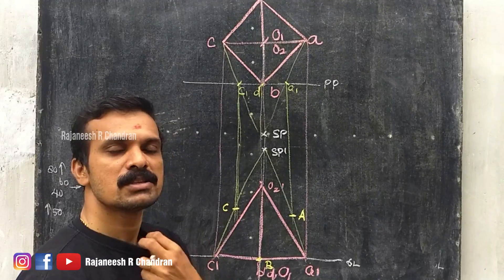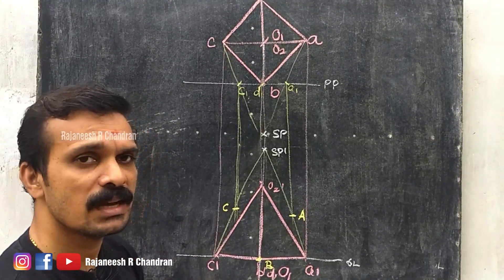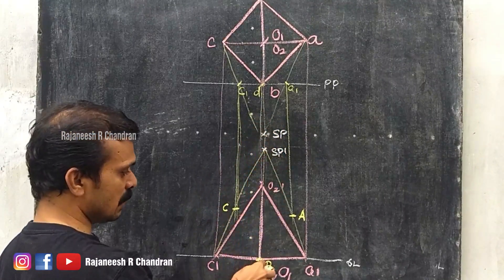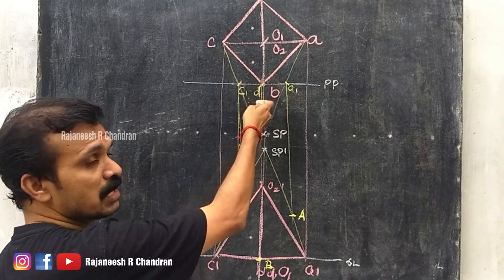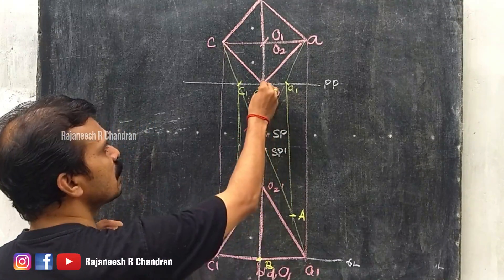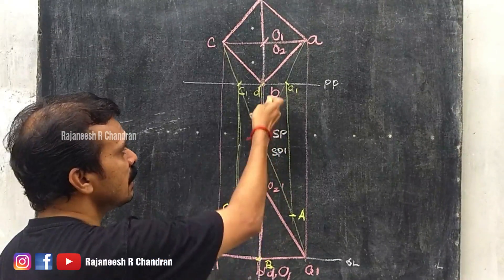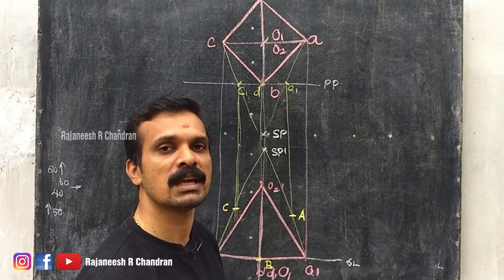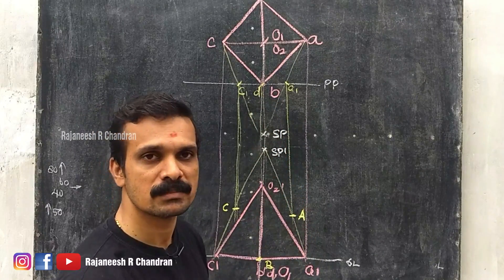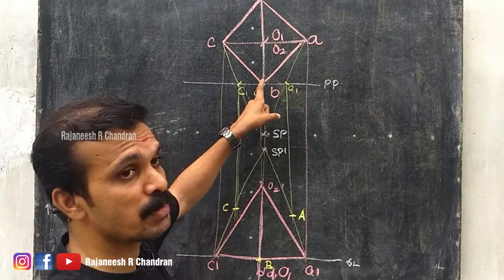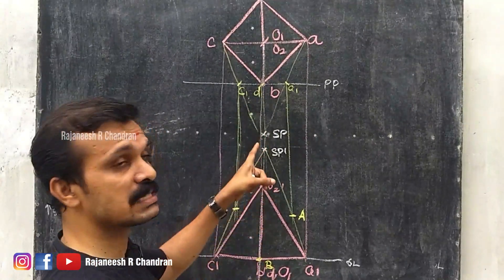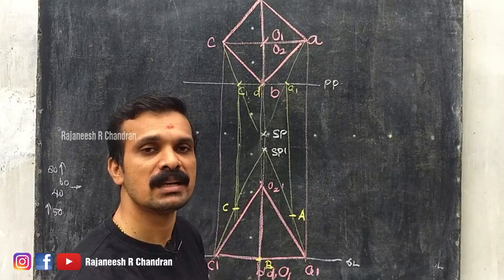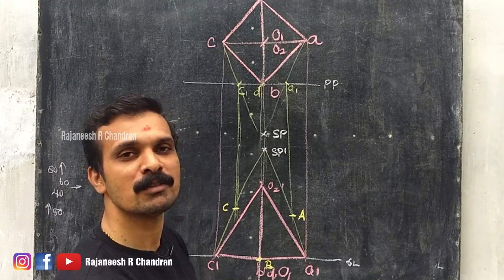Now we have to obtain D. Connect SP with D to get D1, and connect SP dash with D dash to get SP dash D dash. But when drawing a vertical line from D1, you can see that this projector line and the SP dash D dash are the same line. So we cannot obtain any intersection between these two lines and therefore cannot obtain capital D.